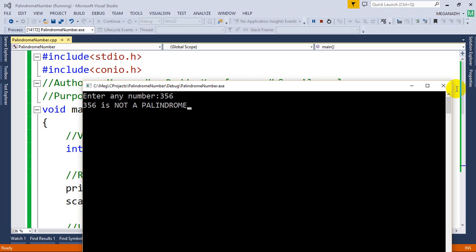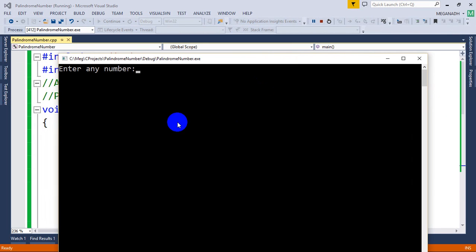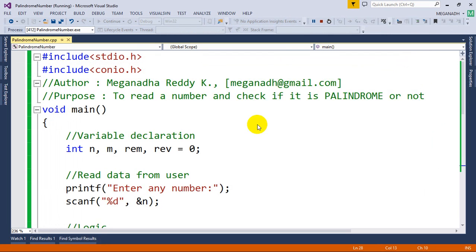Let's run this once again and this time I'm going to enter a palindrome, 1331. So this is a palindrome. Now you can see here it's a palindrome so the logic is working fine.